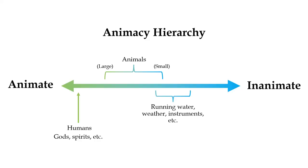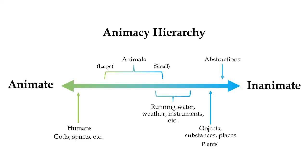Sometimes non-living things that are capable of some degree of movement, like running water, weather phenomena, and instruments, tools, or machines, will be treated as more animate than static things like rocks, substances, or places. Although plants are alive and can therefore be considered animate in some sense, most languages will lump them in with inanimate nouns. Abstract nouns like emotions, conceptions, and verbal nouns almost always end up at the very lowest rung of the hierarchy.